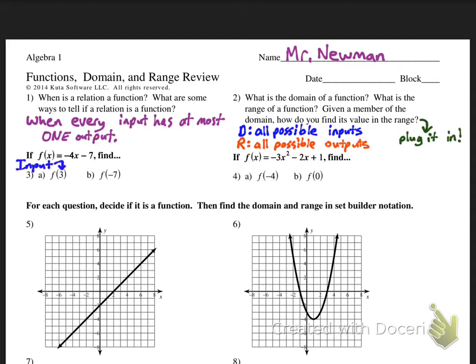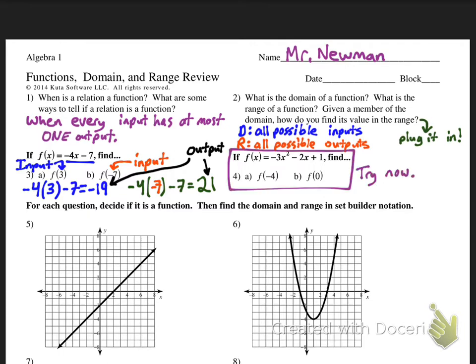I'm gonna do that right here with number three. So we have an input, given a member of the domain. You know, three is an input. How do you find a value in its range? Let's plug it into the function. So I've got the equation negative 4 times X minus 7. Instead of X I'm plugging in 3, and we get negative 19 is the output. Likewise, negative 7 is an input, so let's plug it into the equation again. This time we get 21, so 21 is an output, and for the first one, negative 19 was that output.